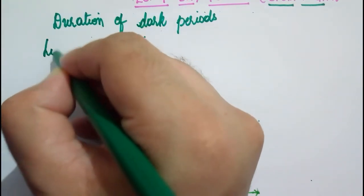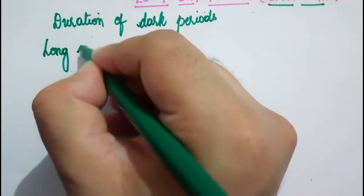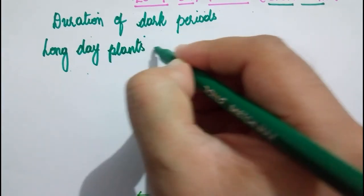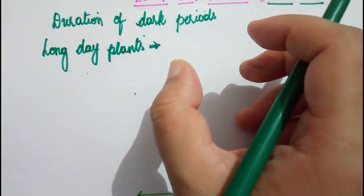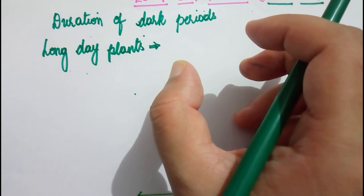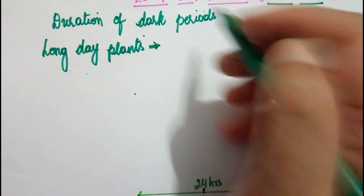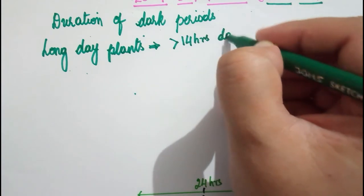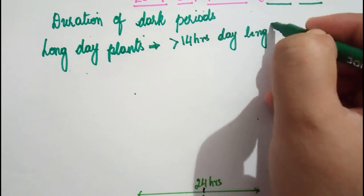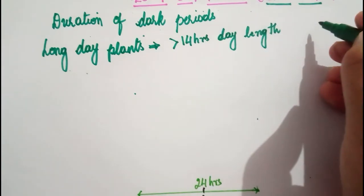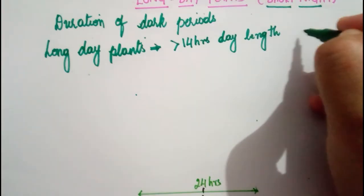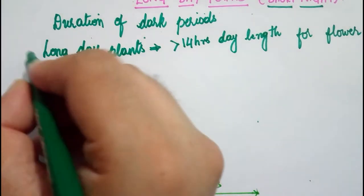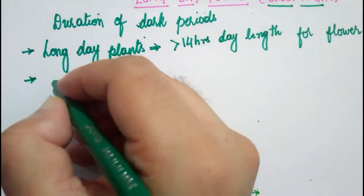Long day plants, also called short night plants, require a long day — meaning the photoperiod, the duration for which they are exposed to light, must be greater than the critical day length. These plants usually require greater than 14 hours of day length for flowering. This value varies from plant to plant; it is not the same in all plants.